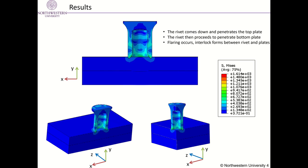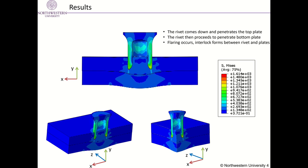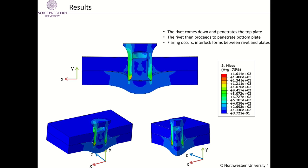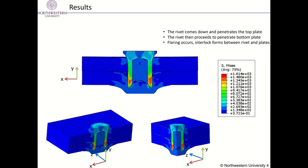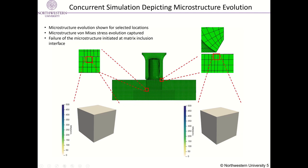Here are our results. The rivet comes down and penetrates the top plate, then proceeds to penetrate the bottom plate. Flaring begins to occur and the interlock between the rivet and plates is formed. After the SPR simulation is completed, the multi-scale framework presents the macro-scale von Mises stress evolution as well as the micro-scale RVE von Mises stress and damage evolution.